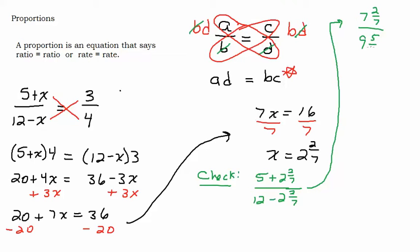9 and 5 7ths. Are you catching that? 12 take away 2 is 10, but you have to take away 2 more 7ths. So it's going to be 9 and 5 7ths. Because 2 7ths and 5 7ths make 7 7ths.